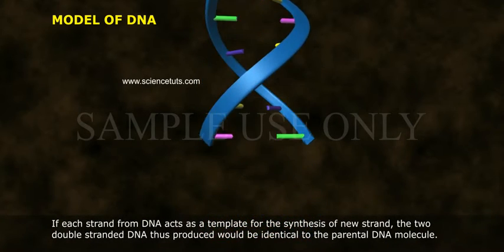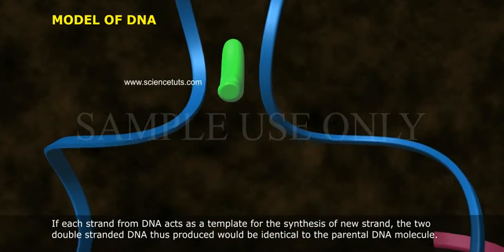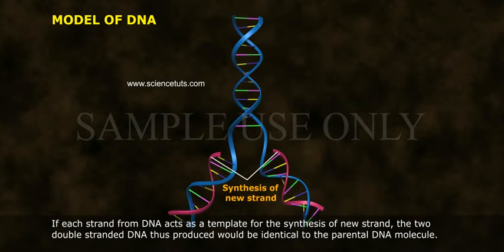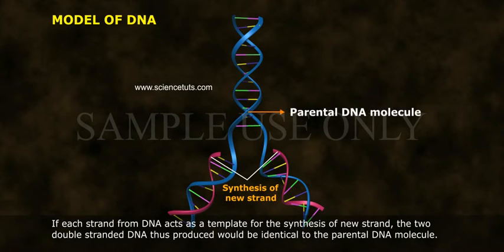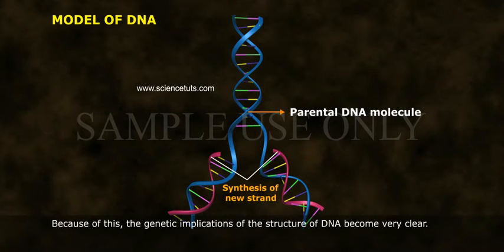If each strand from DNA acts as a template for the synthesis of a new strand, the two double-stranded DNA molecules thus produced would be identical to the parental DNA molecule. Because of this, the genetic implications of the structure of DNA become very clear.